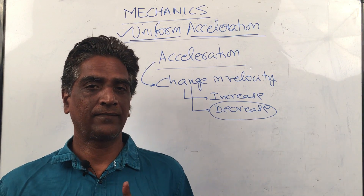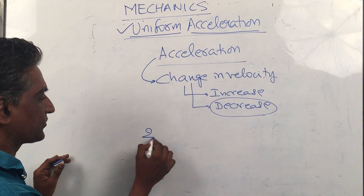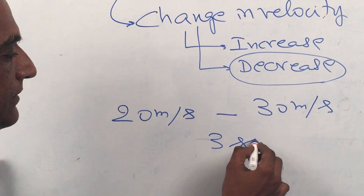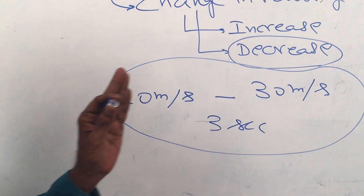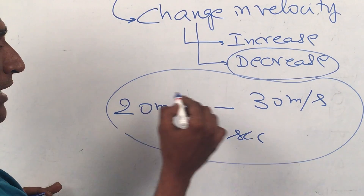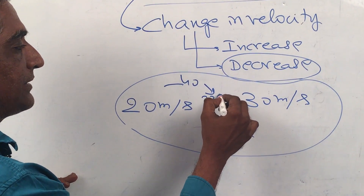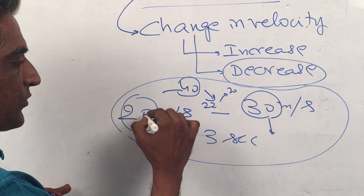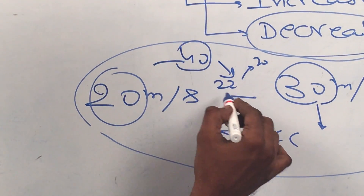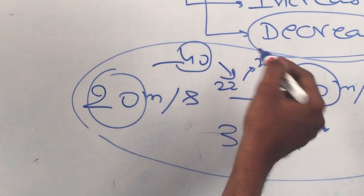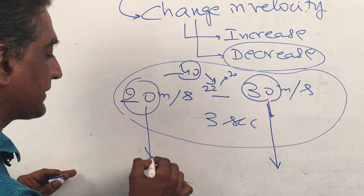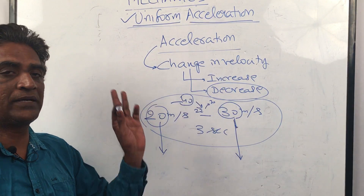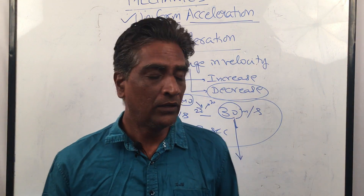But when you say change in velocity, let's say it goes from 20 meters per second to 30 meters per second in 3 seconds — how did it go? It could have gone from 20 to 40, then come down to 22, then gone to 20, and finally at this point showed 30. So it is going from 20 to 40 in half a second, then comes down to 22, and finally reaches 30 meters per second. The instantaneous velocity in the beginning is 20 meters per second and at the end is 30 meters per second.